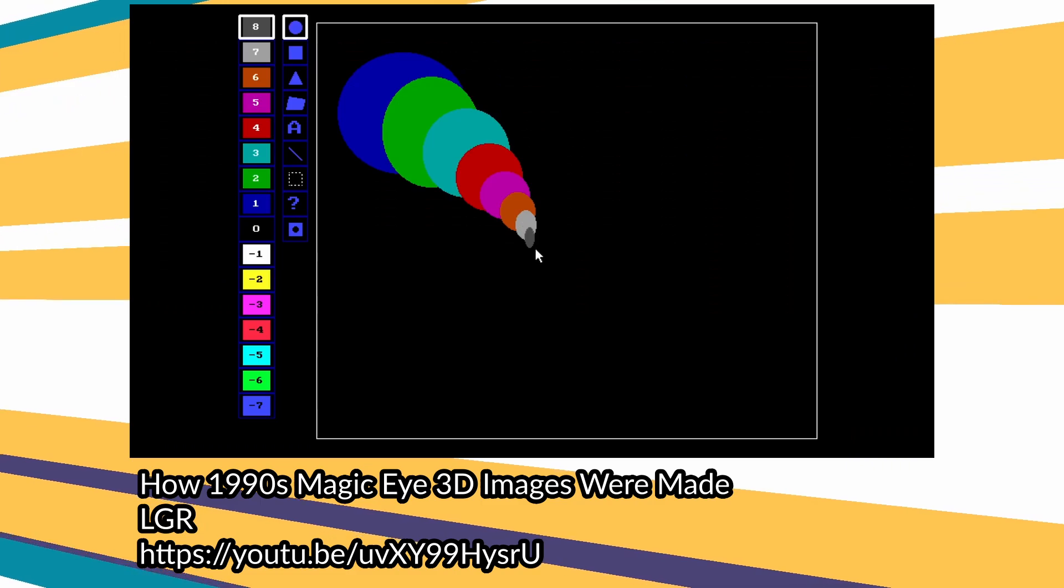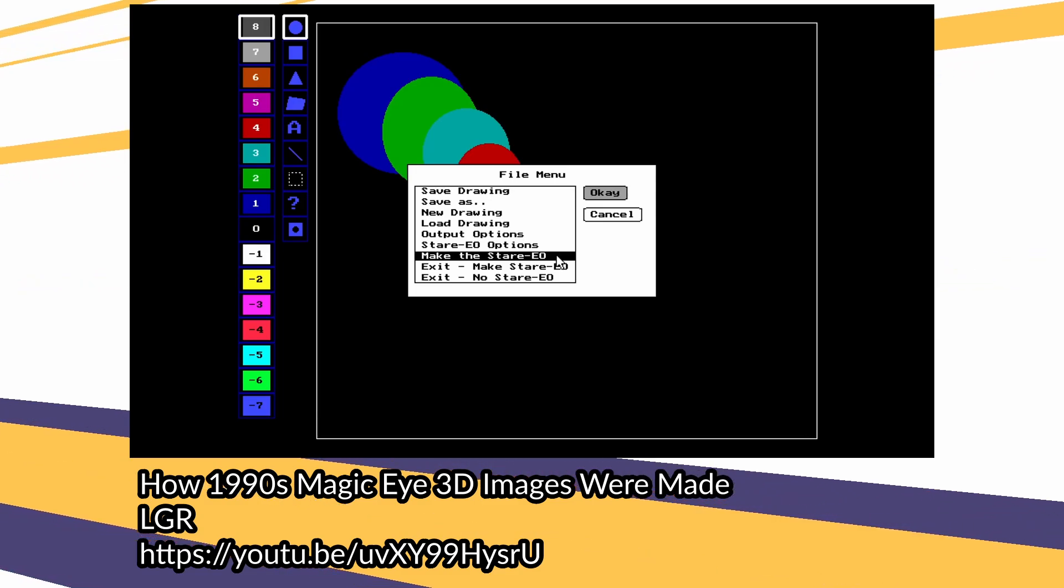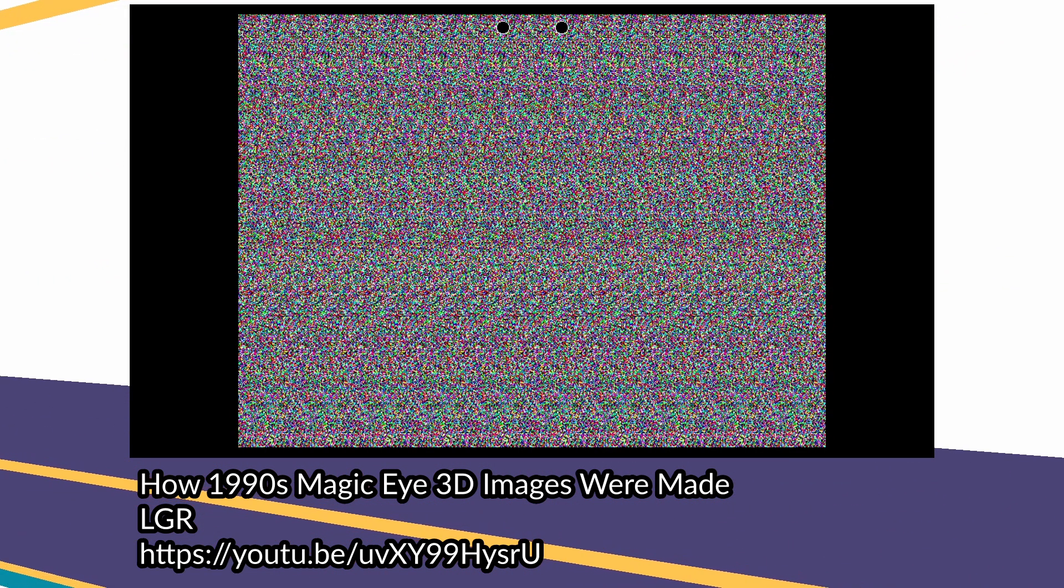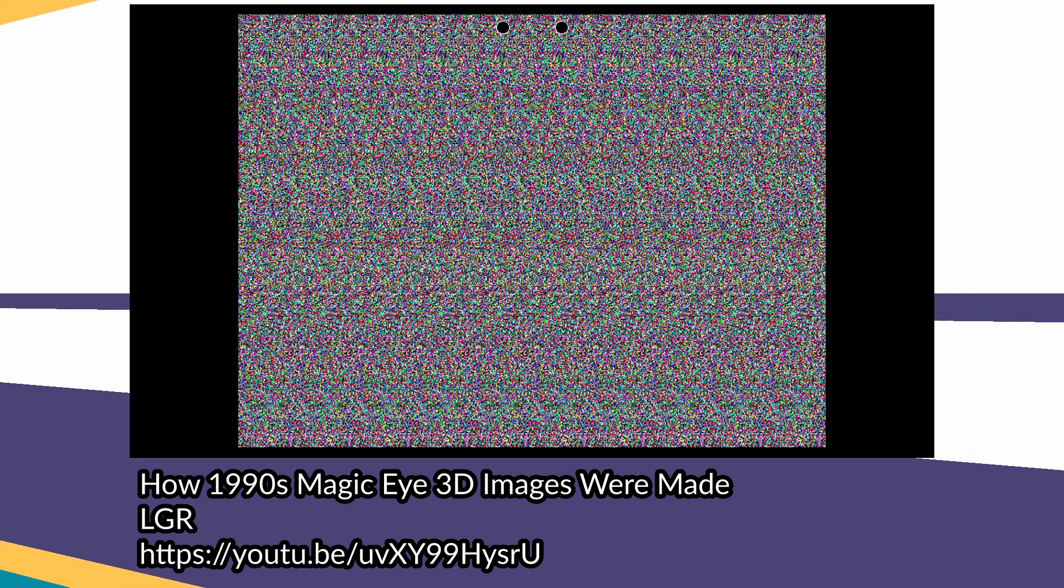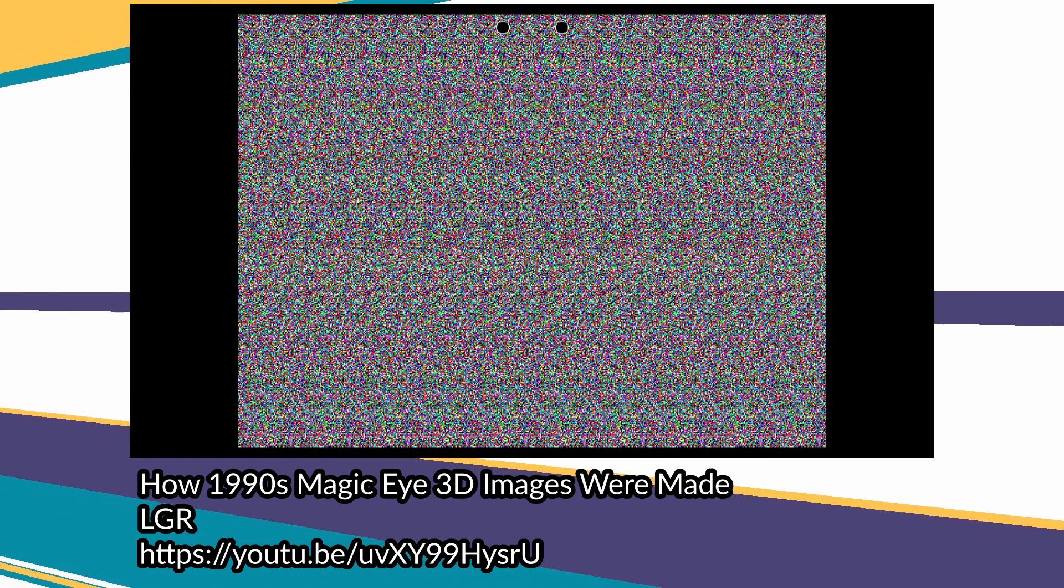A little while ago, LGR made a video about the software that was used to generate the 90s magic eye pictures, more properly called autostereograms or just stereograms. It's a good video, you should watch it, but if you're looking for an explanation of how the software actually generates the pictures, how the pictures work, you won't find it there. That's not what the video's about. That's what this video's about.